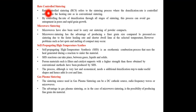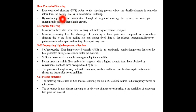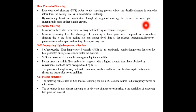Rate controlled sintering refers to the sintering process where the densification rate is controlled, rather than the heating rate as in conventional sintering. By controlling the rate of densification through all stages of sintering, this process can avoid gas entrapment in pores and rapid grain growth.